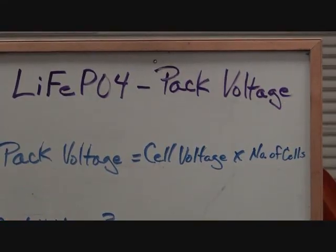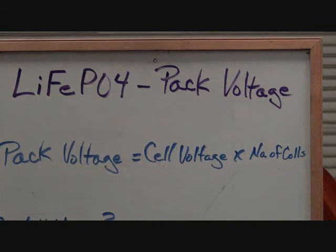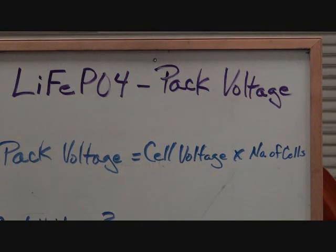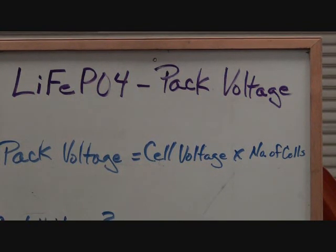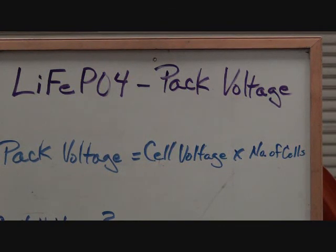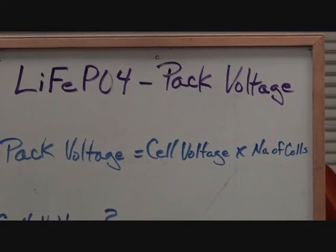So it's fairly obvious that our pack voltage is going to be equal to the individual cell voltage times the number of cells. It's just simple multiplication. But what are we going to multiply?